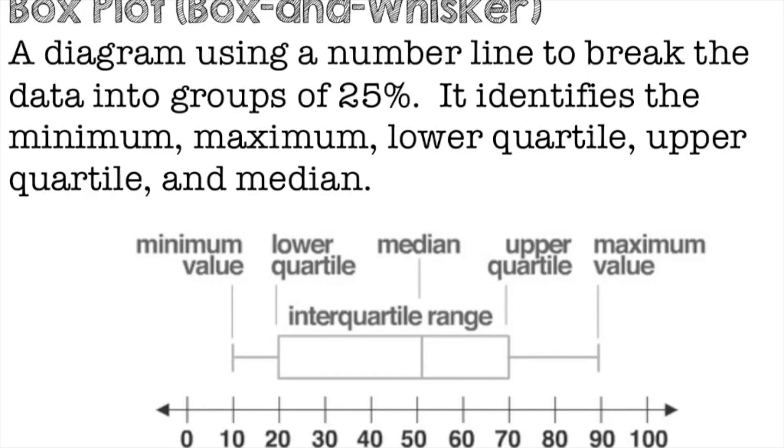For boxplots, we also call those box and whisker plots. That's a diagram using a number line to break the data into 25% groups.